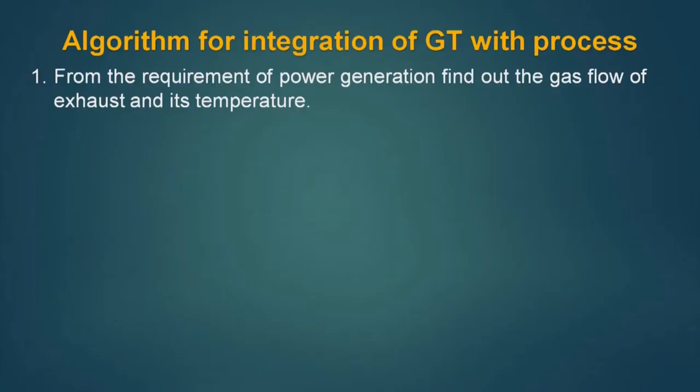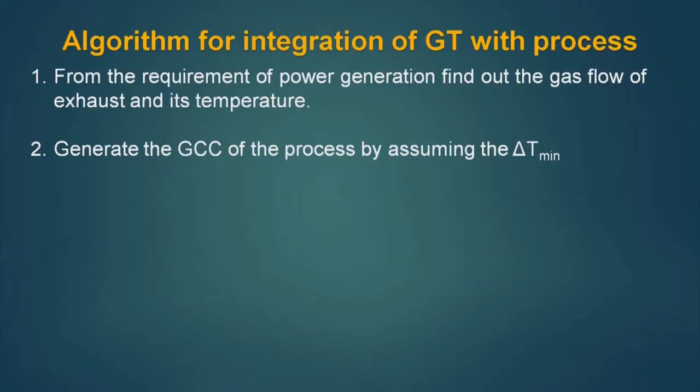Let us now formulate an algorithm for integration of gas turbine exhaust with a process. Point number one: from the requirement of power generation, find out the gas flow of the exhaust and its temperature. Second, generate the GCC of the process by assuming a delta T minimum value. This delta T minimum value is an ad hoc value which can further be optimized through economic analysis.